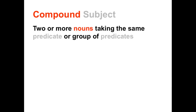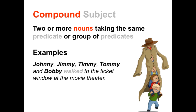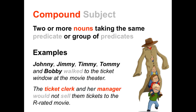A compound subject is when two or more nouns take the same predicate or group of predicates. Here is an example: 'Johnny, Jimmy, Timmy, Tommy, and Bobby walked to the ticket window at the movie theater.' The predicate is 'walked.' Who walked? Johnny, Jimmy, Timmy, Tommy, and Bobby — which means we have five subjects taking the same predicate, giving us a compound subject. Another example: 'The ticket clerk and her manager would not sell them tickets to an R-rated movie.' The predicate is 'would sell.' Who would sell? The ticket clerk and the manager — both take the predicate 'would sell,' which means this clause has a compound subject.